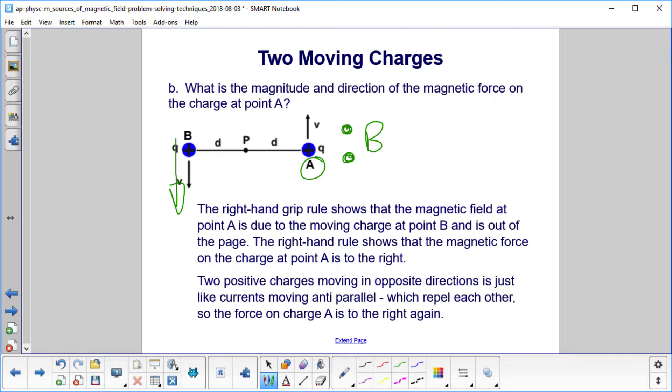We then do the right-hand rule. And that shows us when we put our four fingers in the direction of velocity, face our palm out of the page, or curl our fingers to our palm, and then extend the thumb, we find the magnetic force is this way, to the right. That's the direction.